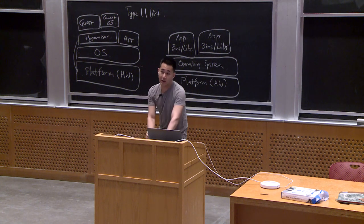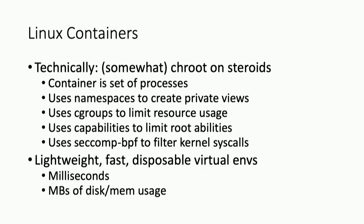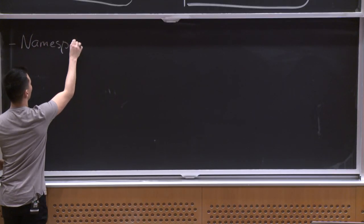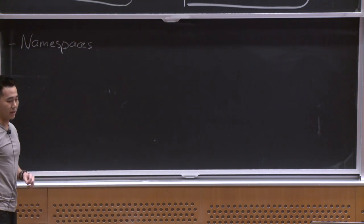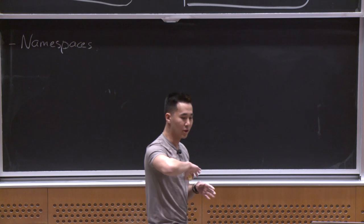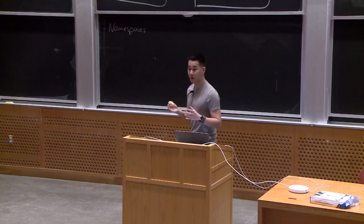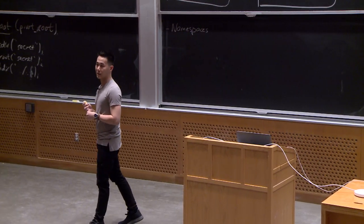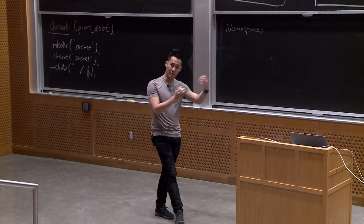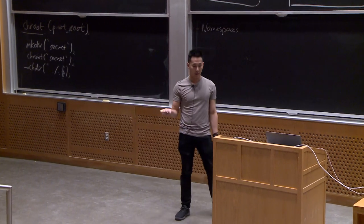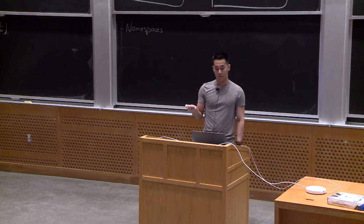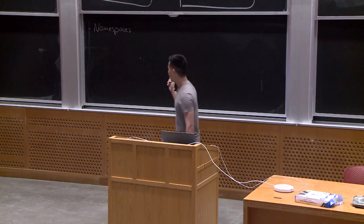Linux containers — some people call it chroot on steroids, but it's actually much more. There are several mechanisms that allow Linux containers to be Linux containers. The first main feature of the kernel is called namespaces, which offers a way of isolating different logical groups away from the main operating system. A container is basically a set of processes — a process tree. When it is running, it's a process; when it's not running, it is what we call a container image.